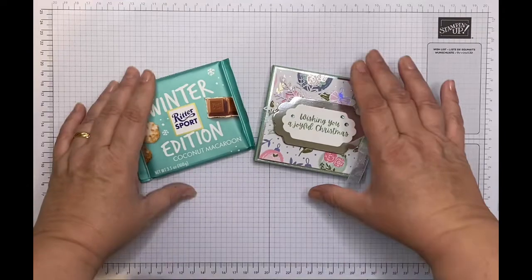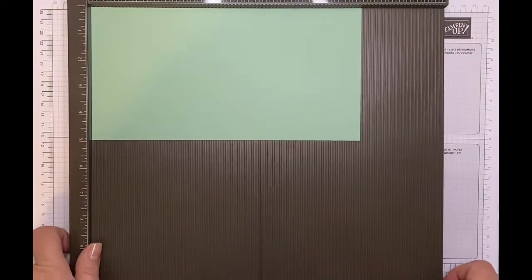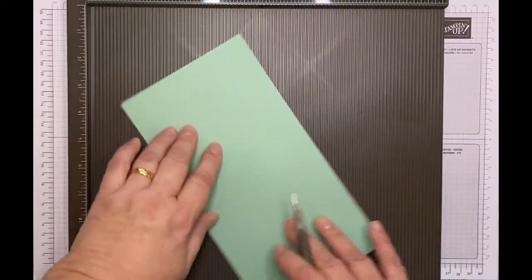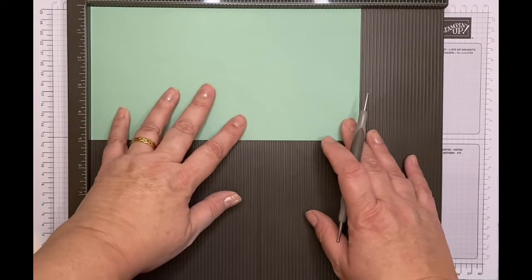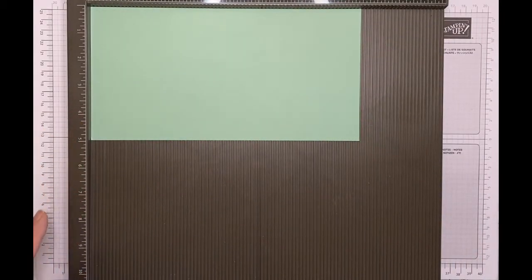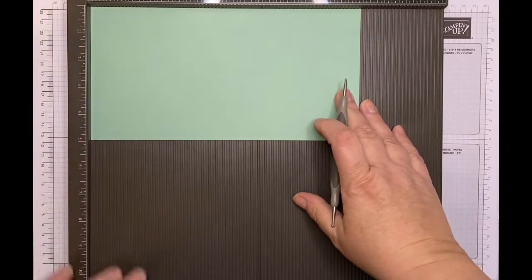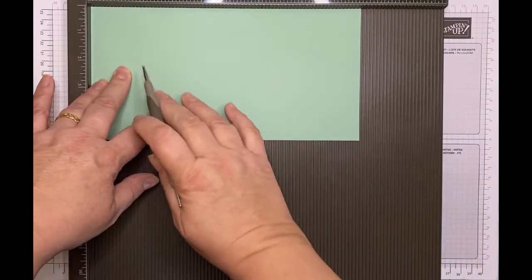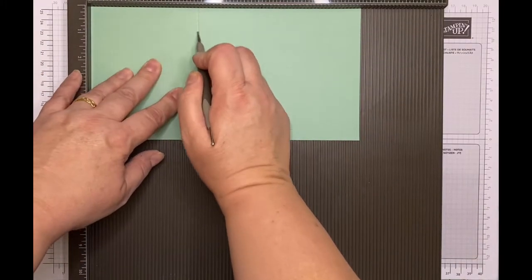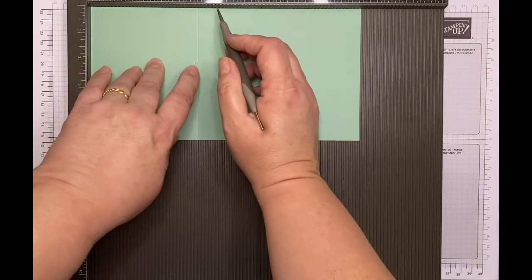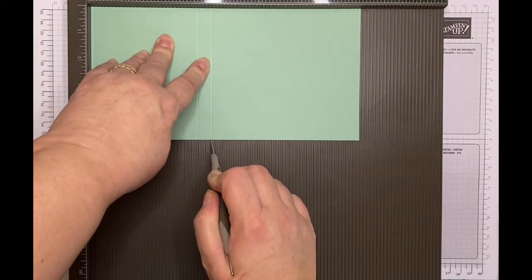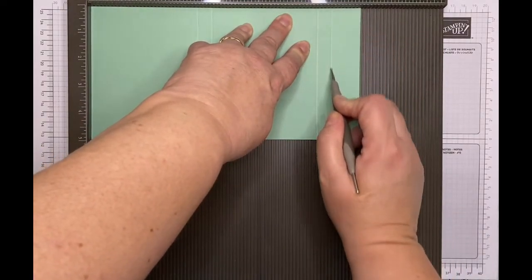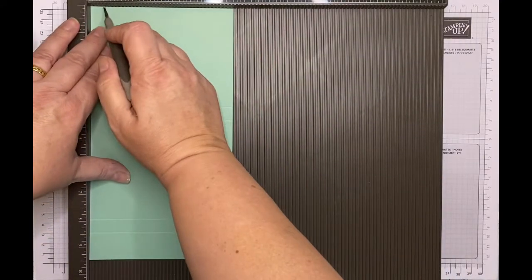So I'm going to be making this box for you today. This is my cardstock, my mint macaroon and I have cut this to nine and a half inches by five inches. For all my measurements including metric in centimeters as well as imperial in inches, please follow the links to my blog in the description below. So on the long side, I'm going to score it at three and three quarters, four and a quarter, eight, and eight and a half. And then on the short side I'm going to score it at half an inch.